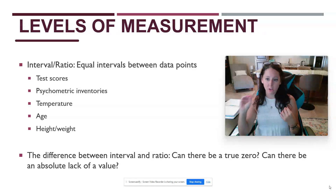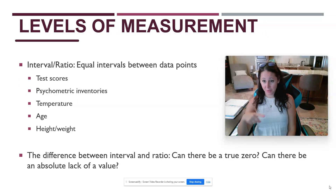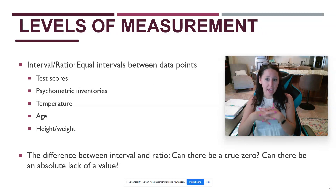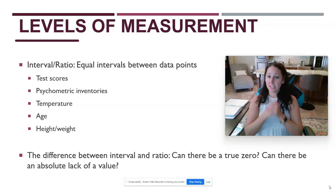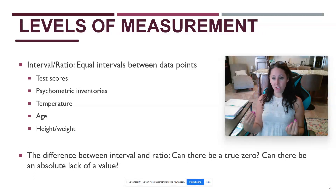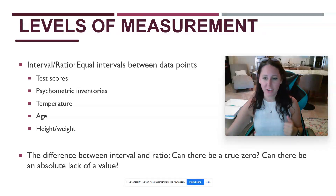Ratio means there can be an actual zero. Usually in research methods and statistics, interval and ratio get collapsed together for practical purposes, but theoretically it's important to know the difference. That's it for levels of measurement. The next topic we're going to move on to is considerations of validity within your variables.